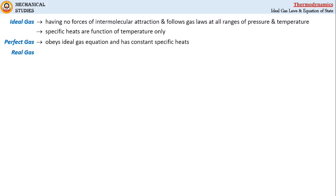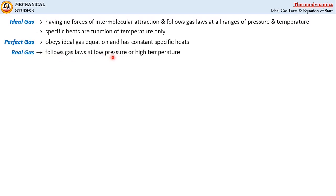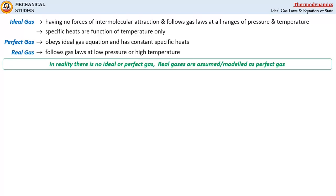Apart from these terms, all existing natural gases fall under the category of real gas. It has been found by experimentation that real gas follows gas laws at low pressure or high temperature, or at both conditions, where the density of gas decreases and the intermolecular forces of attraction also decrease. Please note that in reality there is no ideal or perfect gas; however, real gases are assumed or modeled as a perfect gas during analysis.